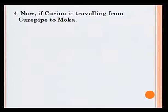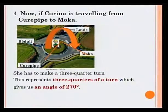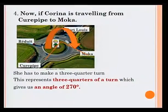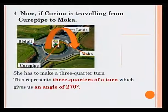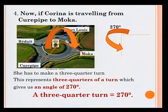Let's have a look at our fourth case. If Corinna is travelling from Cupid to Mocha, she is going to take the third exit. This represents three quarters of a turn, which gives us an angle of 270 degrees. Three quarters of a turn is equal to 270 degrees.